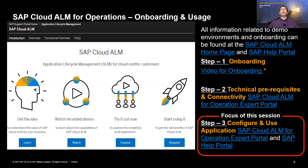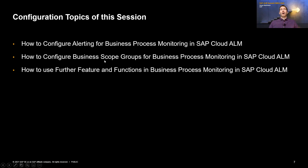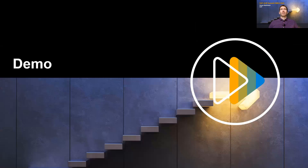First I would like to show you how you can configure alerting for business process monitoring. Then I want to show you how you can configure the business scope groups feature, which is basically our authorization concept in business process monitoring. And then I will show you some more further functions and features. So with this, I will jump directly into the tool and show you hands-on what you can do.